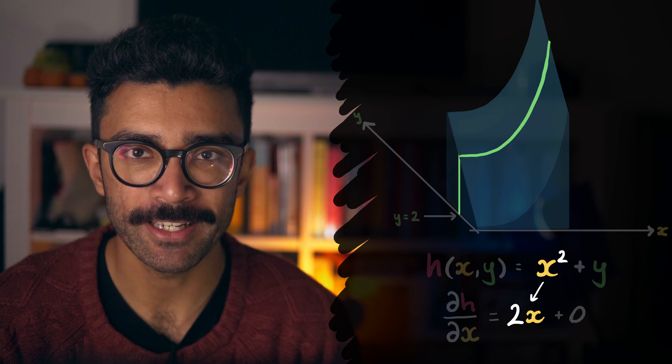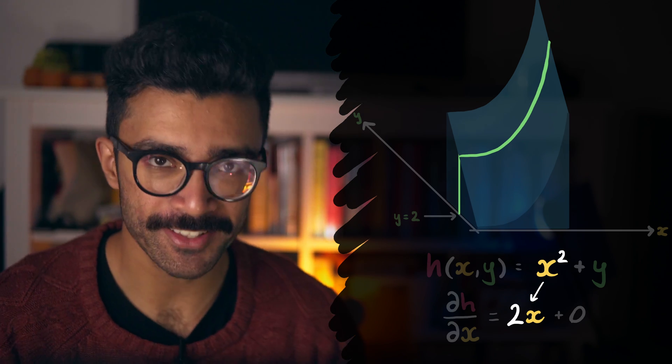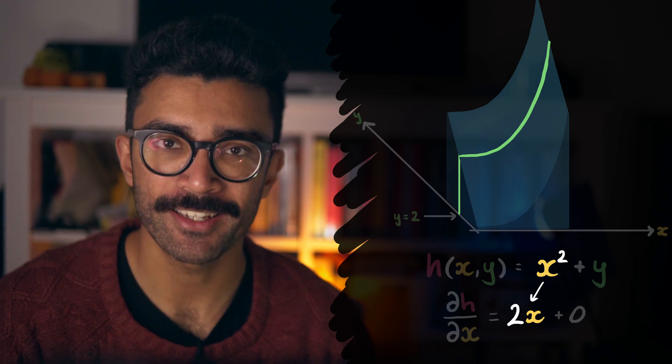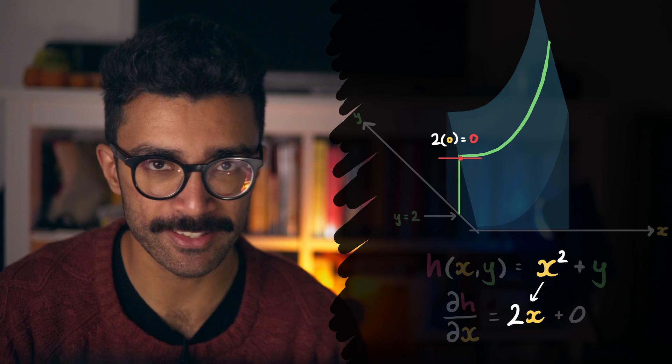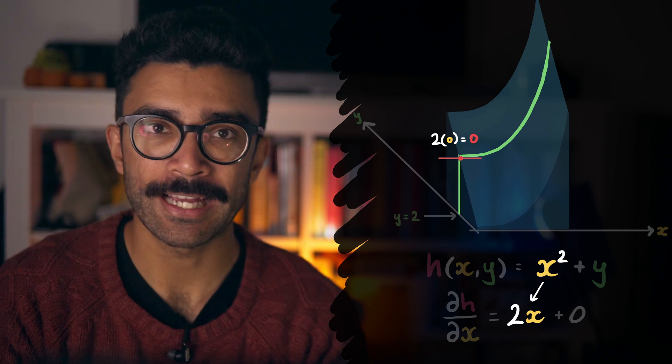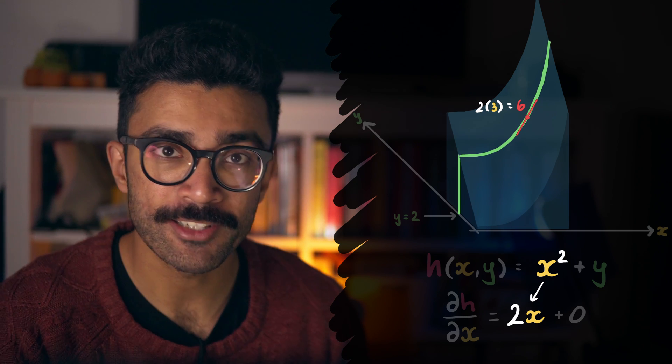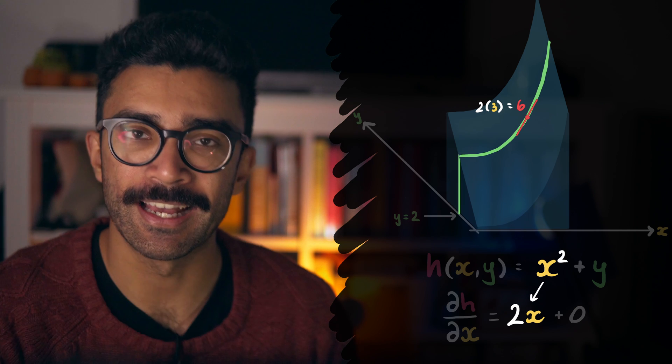What this means is that once we pick a constant value of y to move along and move in the x direction, the gradient of the height surface changes like 2x. The gradient or slope at x equals zero is simply zero, meaning the surface is flat at x equals zero. The gradient at a higher x value is two times that x value, meaning the slope is getting steeper and steeper with every change in x as expected.